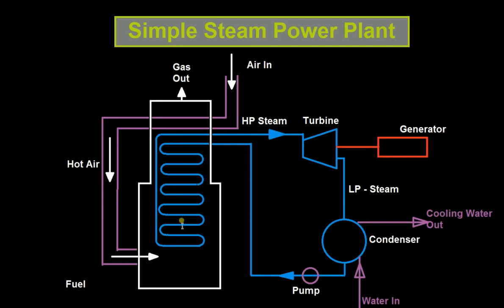Using the heat of the outgoing gas to heat the incoming air improves the efficiency of the system. Fuel and hot air come in to heat the water. As the water gets heated it becomes steam, and heating it further produces high pressure steam. That high pressure steam is transferred into the turbine, which has blades subjected to the pressure of the steam. The rotating turbine blades are connected to the generator, which produces electricity.